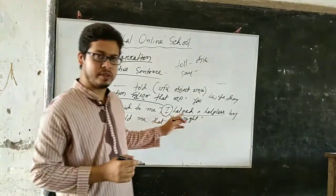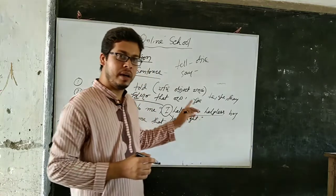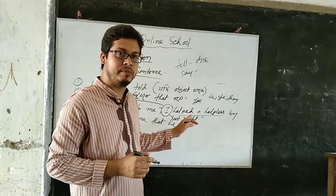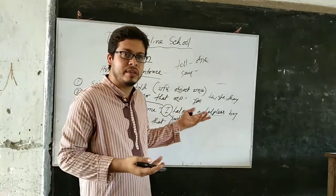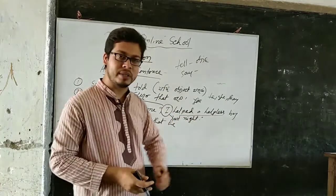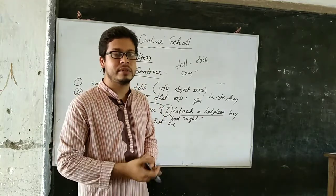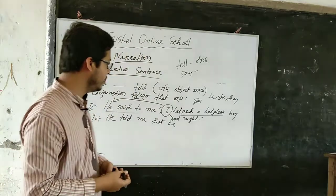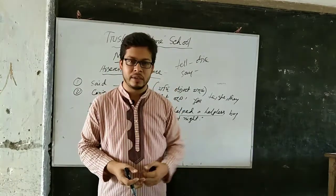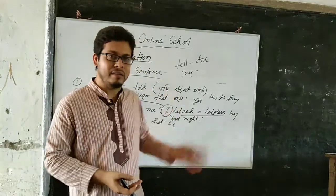Now tense change: 'helped' is the past form of 'help,' making it past indefinite tense. Past indefinite tense becomes past perfect. The structure of past perfect is: subject + had + past participle. The past participle of 'help' is 'helped' — same form. So it becomes 'he had helped.' If you do not have a clear concept of tenses, you cannot change narration. So before learning narration, I request you to understand sentence structures and tenses thoroughly.